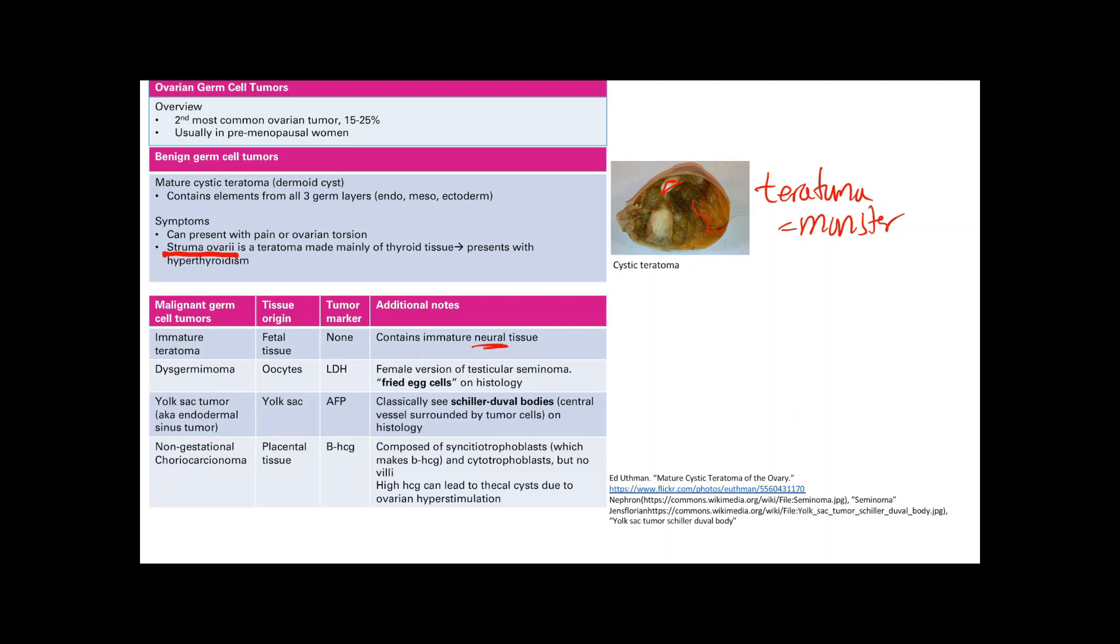The second germ cell malignant tumor is a dysgerminoma. It originates from the oocytes and the tumor marker here is LDH. LDH is elevated when there is a dysgerminoma. This is the female version of a testicular seminoma, which we'll see later.